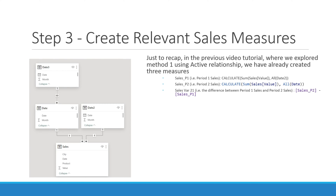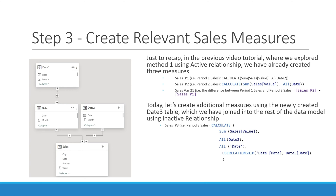Just to recap: in the previous video tutorial where we explored method one using active relationship, we already created three measures — Sales P1 to calculate sales for period one, Sales P2 to calculate sales for period two, and Sales Variance 2-1 to calculate the difference between period one and period two sales. Today, let's create additional measures using the newly created date three table, which we have joined to the rest of the data model using inactive relationship.